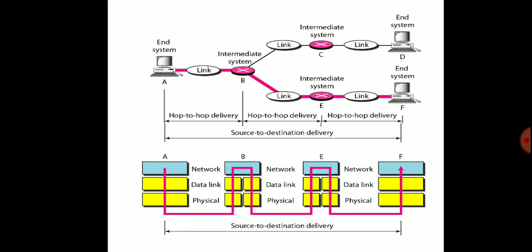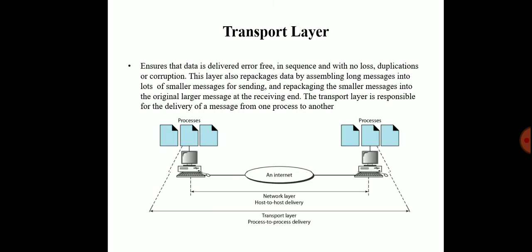Here, source-to-destination delivery in the physical layer path: the intermediate system is linked through intermediate topologies from the source system to the end system. The end system provides host-to-host delivery step by step through the network data link and physical layer methodology. Now the next layer is the transport layer.